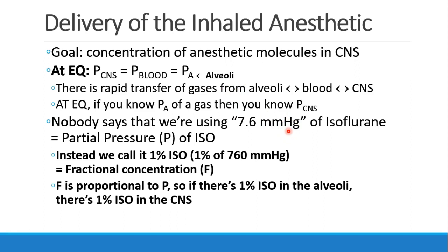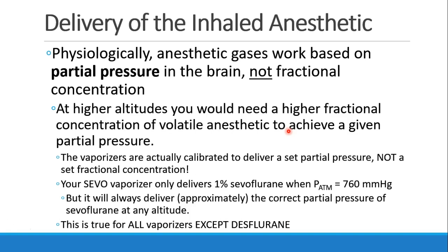Since F is proportional to P, if there's 1% iso in the alveoli, there's also 1% isoflurane in the CNS. Now physiologically, these anesthetic gases work based on partial pressure in the brain, not fractional concentration. So if you would perform anesthesia up on Mount Everest, you couldn't achieve the same anesthesia with 1% isoflurane that you achieved down at sea level.